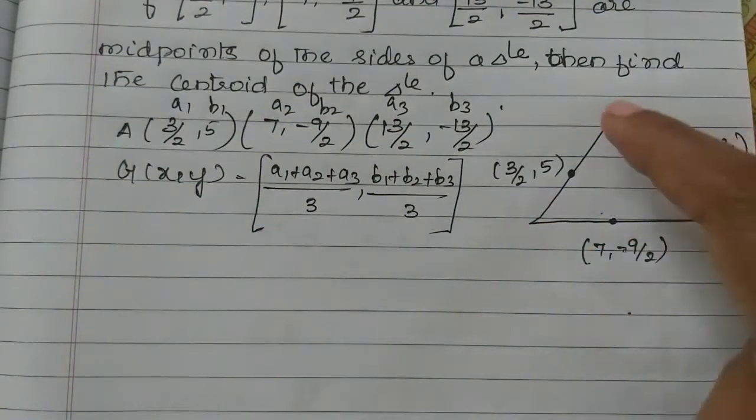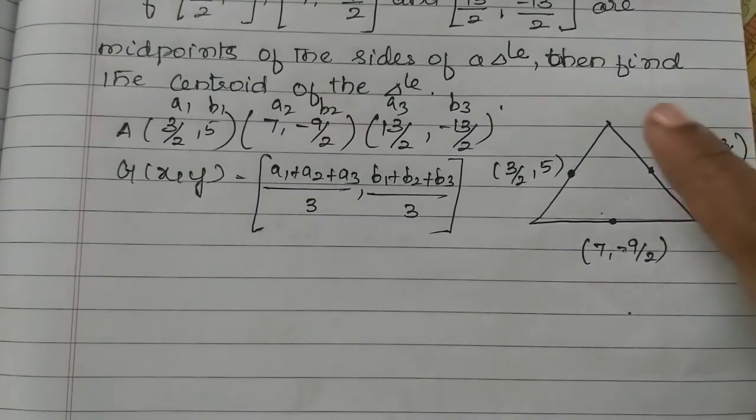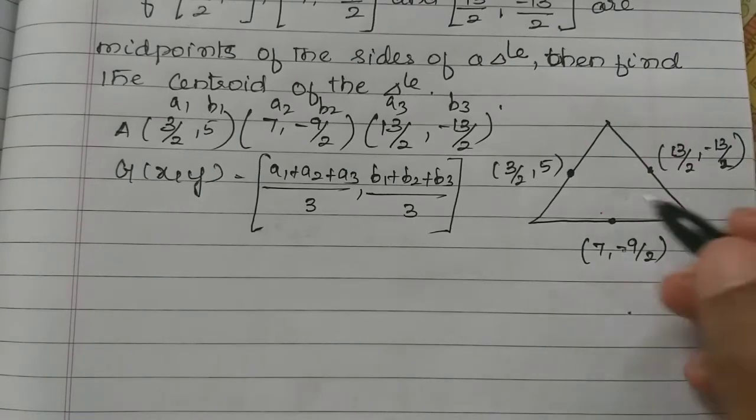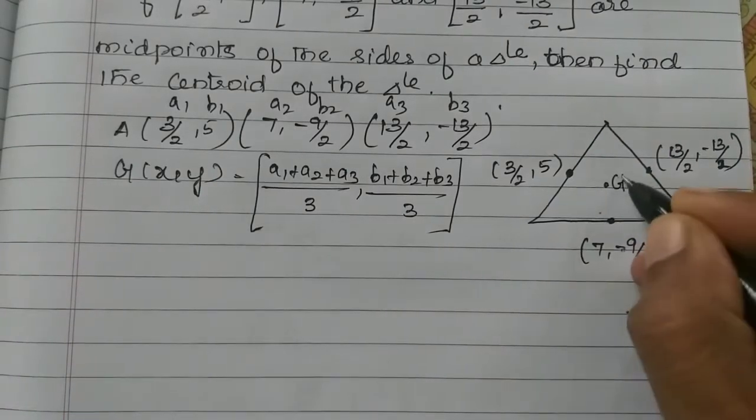So we will get the vertices of the triangle. We will get the midpoint and we will get the centroid, that is G. So G is the coordinates.